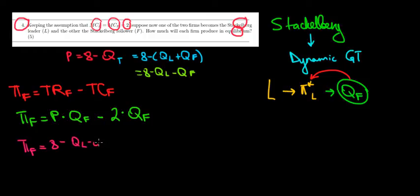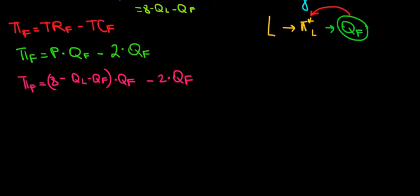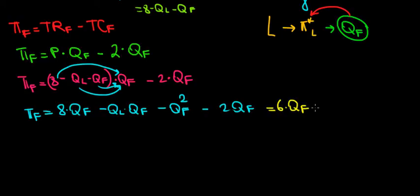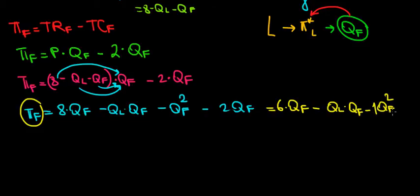So the profit of the follower equals eight minus QL minus QF, multiplied by QF, minus two times QF. Opening the brackets, we get: eight times QF, minus QL times QF, minus QF squared, minus two times QF. Simplifying, eight QF minus two QF gives six QF, so the profit of the follower equals six QF minus QL times QF minus QF squared. This is a quadratic equation in QF.